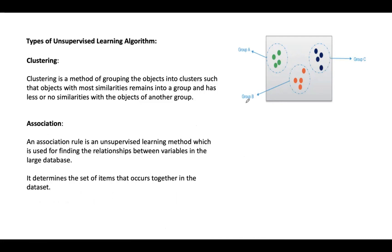The second type is association. Association is an unsupervised learning method mainly used to find relationships between variables. It determines sets of items which occur together in a dataset. Association rules make marketing strategies more effective — for example, people who buy bread also tend to purchase butter or jam. This is a typical example of association rules in market basket analysis.